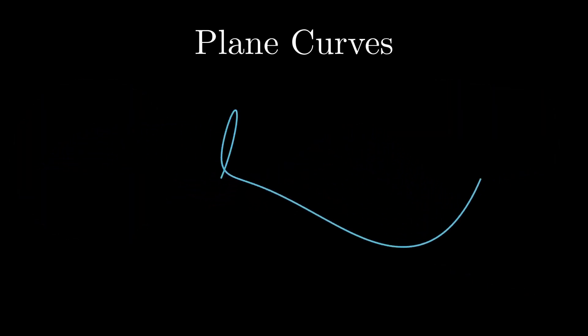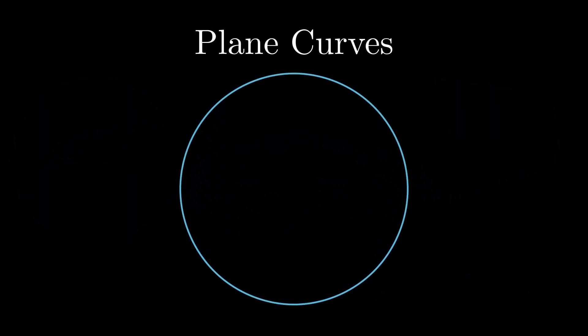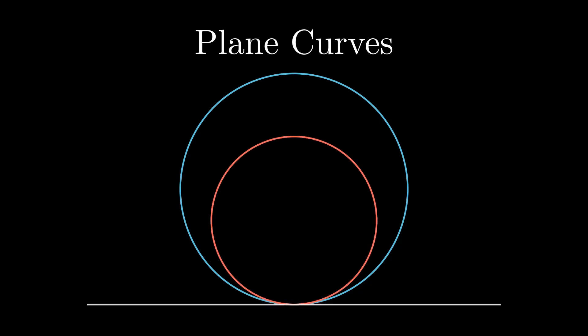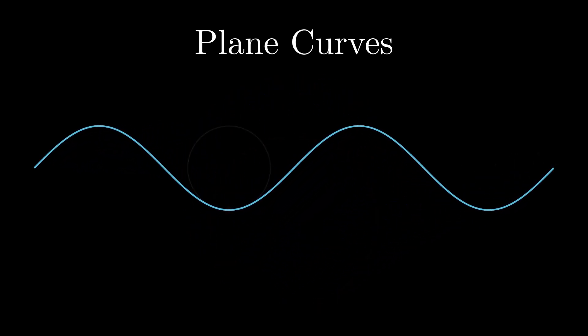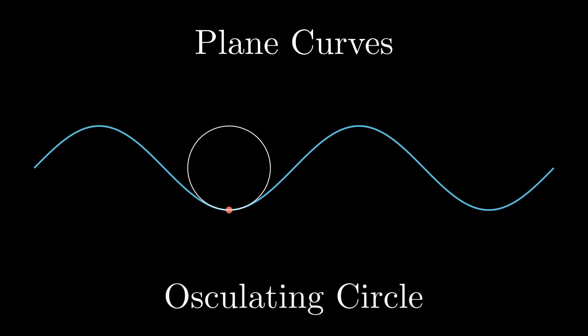The simplest example is a circle, where the curvature is the same at every point. If we consider a smaller circle, it appears more curved, meaning the curvature is bigger. This suggests that the curvature is the reciprocal of the radius. Now let's look at a general smooth plane curve. At every point, we can approximate the curve with a circle, called the osculating circle.